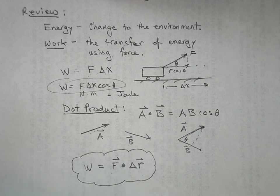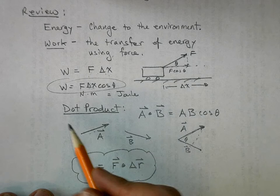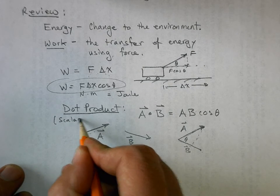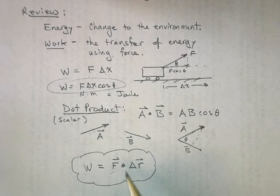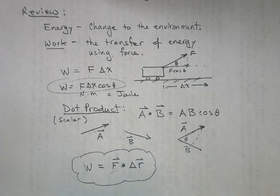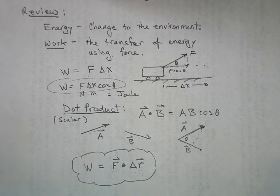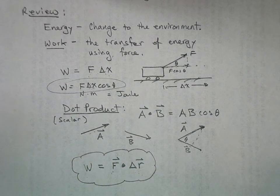And one thing to keep in mind is that these two vectors are being multiplied together in such a way to give us a scalar. So quite often the dot product is more properly called the scalar product, because the answer, even though you're multiplying two vectors together, the answer is a scalar. So work has no spatial direction associated with it. Okay, that's it for the review.